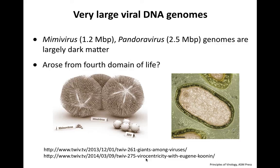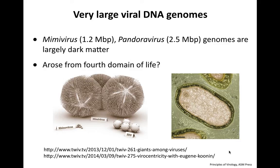I recommend two podcasts for further learning. In 'Giants Among Viruses,' we talked with co-discoverers of Mimi, Pandora, and Pithoviruses, who believe viruses began large and lost genes — that these large DNA viruses are intermediates in gene loss. On the other hand, Eugene Koonin believes viruses also started small and acquired genes, and that virus-like elements are precursors of all cellular life. They have distinctly opposing viewpoints. The bottom line is that probably multiple mechanisms explain the origin of both DNA and RNA viruses.